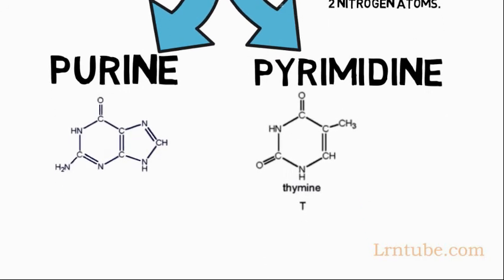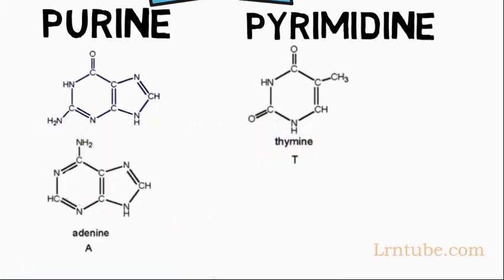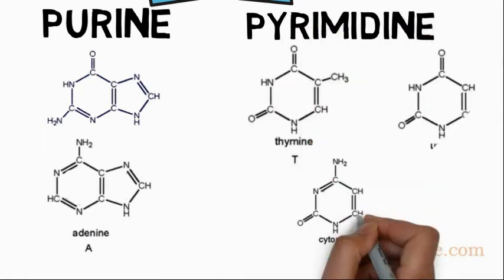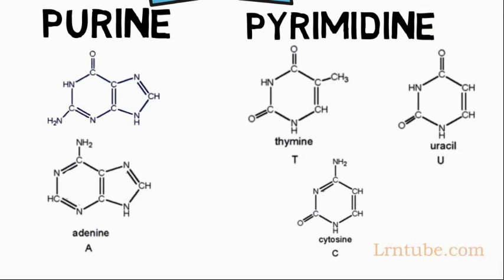If that is too confusing for you, you can simply say guanine and adenine are double ring purine molecules, while cytosine, thymine, and uracil are single ring pyrimidine molecules.